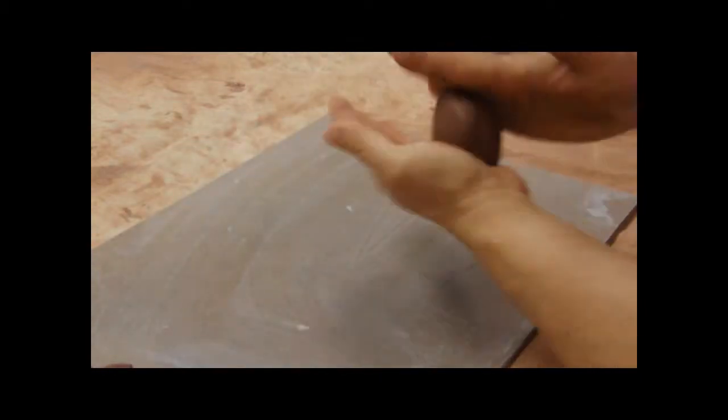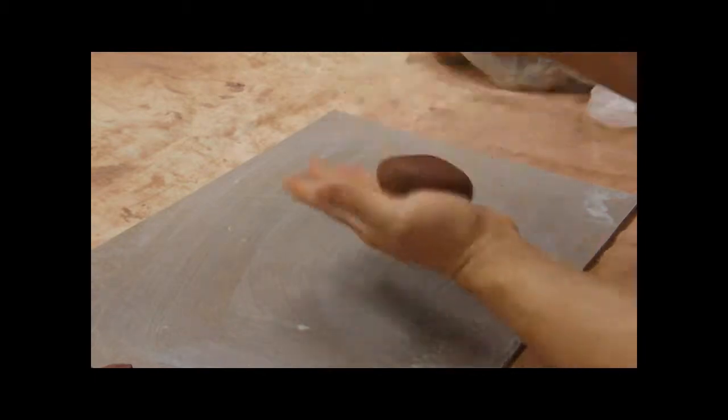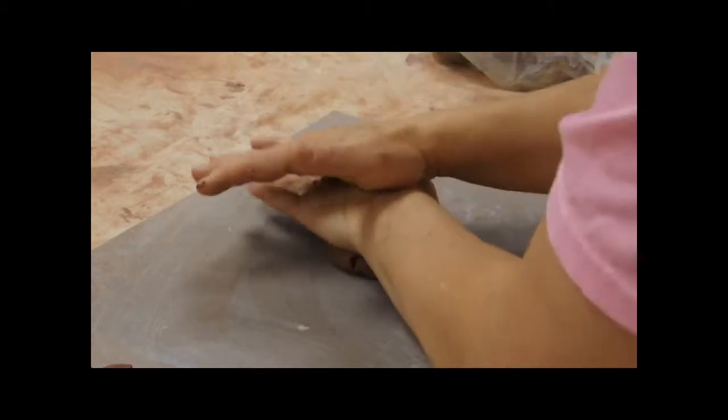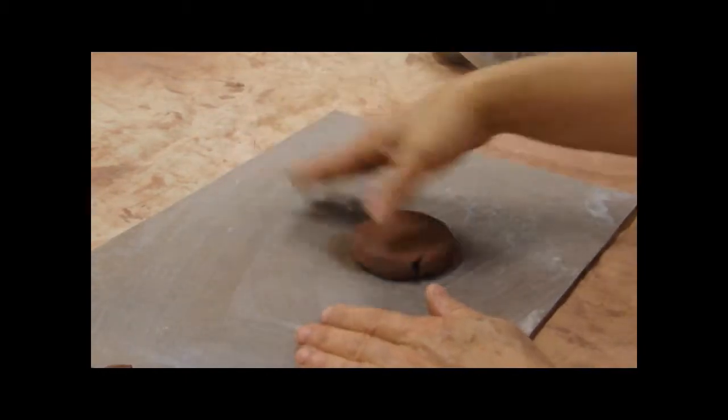So you roll it around, get it so that it's kind of a rounder shape. It doesn't have to be a ball, it's just because you're going to end up making it flat. So you use your hands to flip it. It helps make your bottom strong.